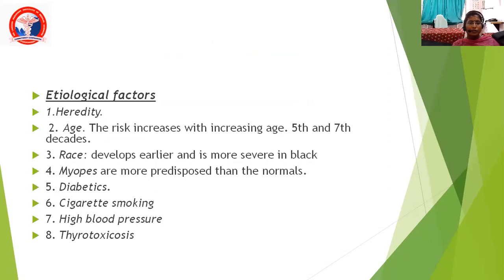Coming to the etiological factors: it can be hereditary. The risk increases with increasing age, particularly in the 5th and 7th decades. Regarding race, it develops earlier and is more severe in Black individuals. Myopes are more predisposed than normals, and so are diabetics. Cigarette smoking also increases the risk factor of open-angle glaucoma, followed by high blood pressure and thyroid problems like thyrotoxicosis.